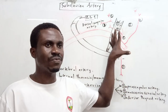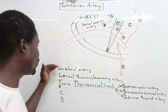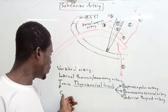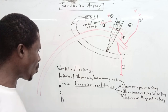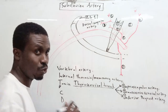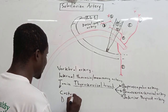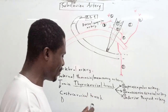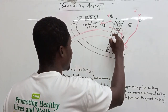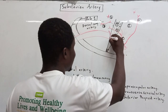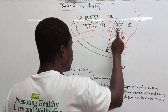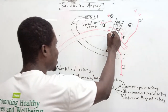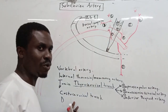Those are the branches from the first part of the subclavian artery — V, I, T from VITamin CD. Now the C in VITamin CD is the costocervical trunk, coming from the second part of the subclavian artery, deep to the scalenus anterior muscle.